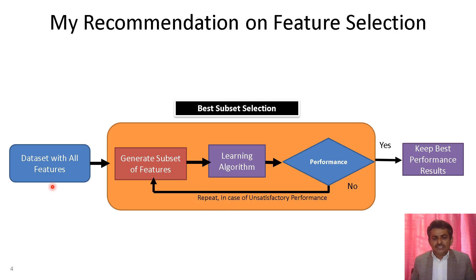We start with the dataset of all features, generate a subset of features, then apply a learning algorithm and evaluate the performance of the model. If the performance is not satisfactory, we repeat this process — regenerate a subset of features, apply the learning algorithm, and evaluate performance again. Whenever the performance is satisfactory, we keep the best performance results. Most of the time in our experiments, we apply feature selection in such a manner.